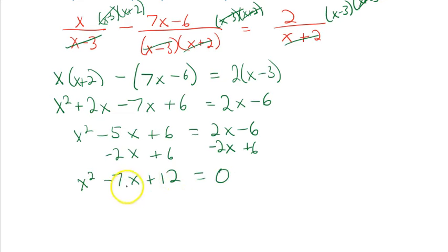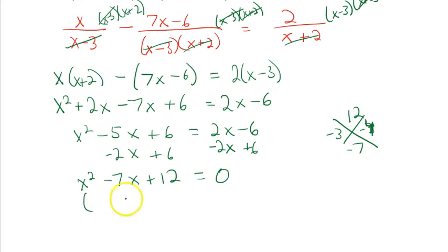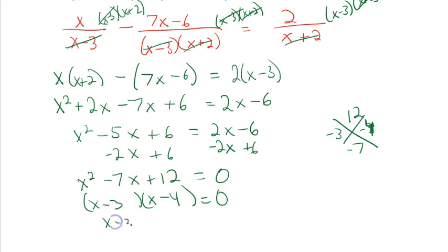I subtract 2x and add 6 to get everything on one side: x² − 7x + 12 = 0. Having a quadratic equal to zero lets me solve it — by factoring, quadratic formula, or graphing. I'll use factoring since it's available: I need numbers that multiply to 12 and add to −7, which is −3 and −4. So it factors to (x − 3)(x − 4).